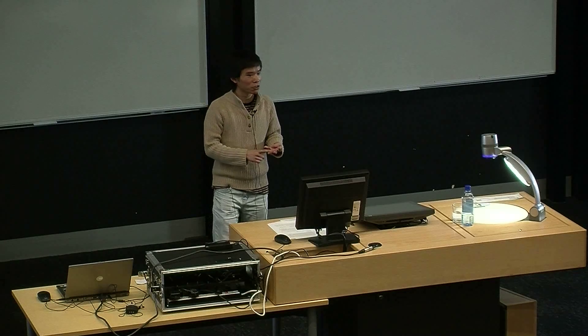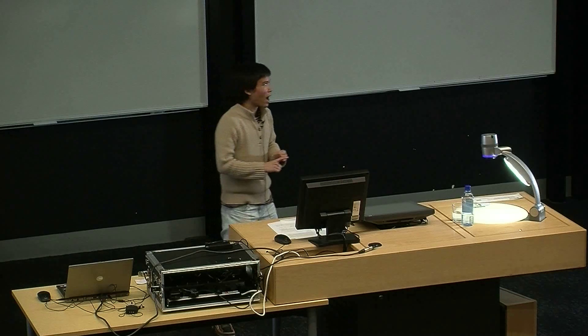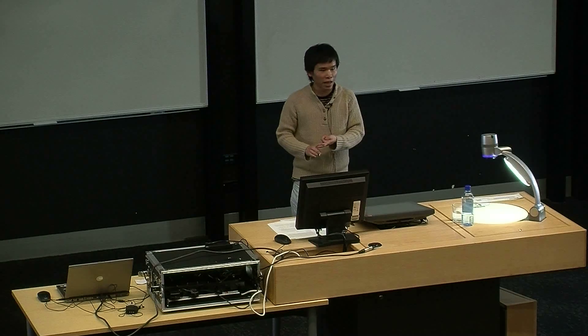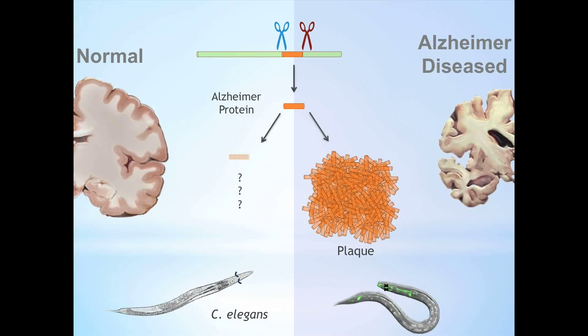However, mammal research is expensive and time consuming and monkeys could even take over the Auckland Harbour Bridge like in the movie Rise of the Planet of the Apes. Luckily, there are also other animals which are perfect for neuroscience research but are not very well known to the public. Here I would like to introduce you the small worm known as C. elegans.